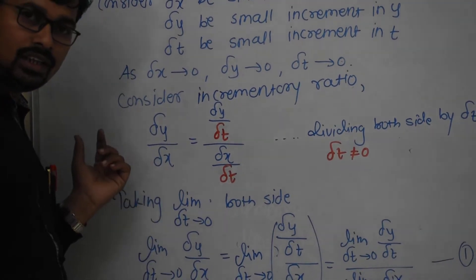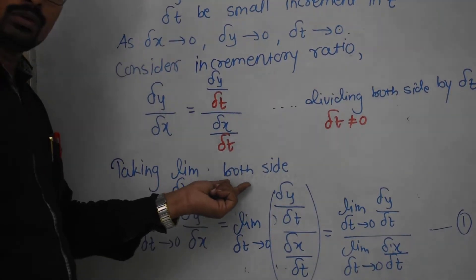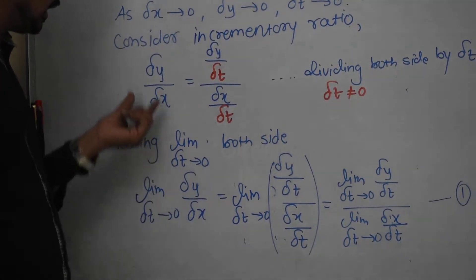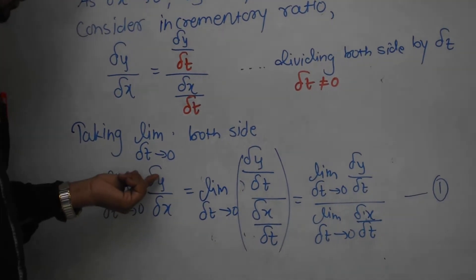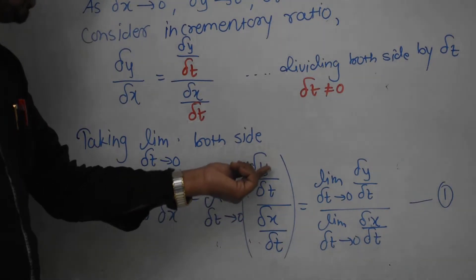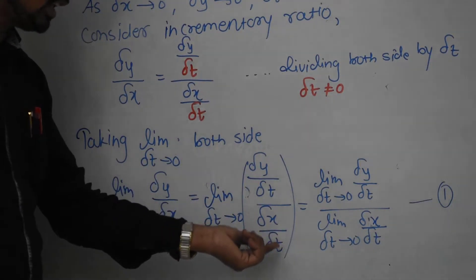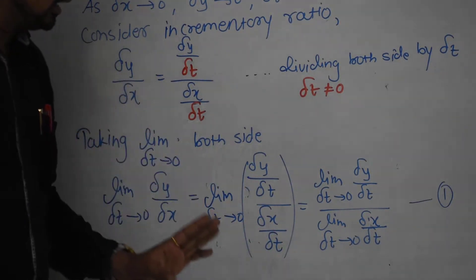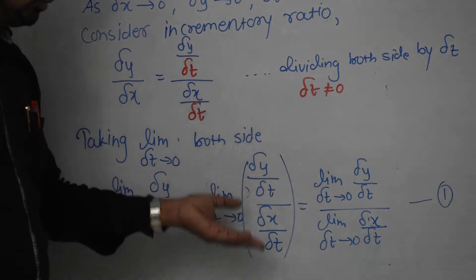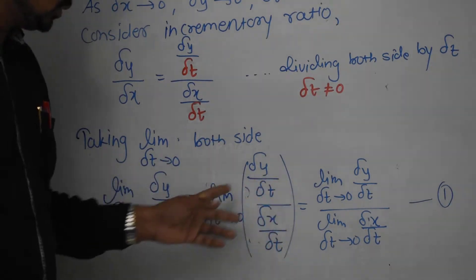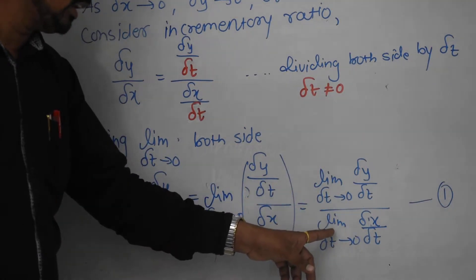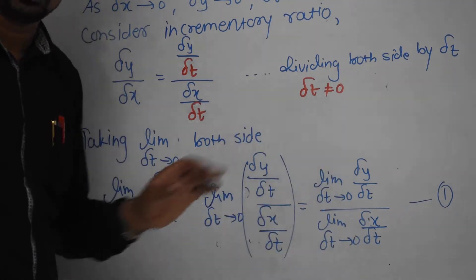Now we take the limit as delta t tends to 0 on both sides. When we take this limit, it looks like: limit as delta t → 0 of (delta y / delta x) equals (limit as delta t → 0 of delta y / delta t) divided by (limit as delta t → 0 of delta x / delta t). We can separate the limit across numerator and denominator.